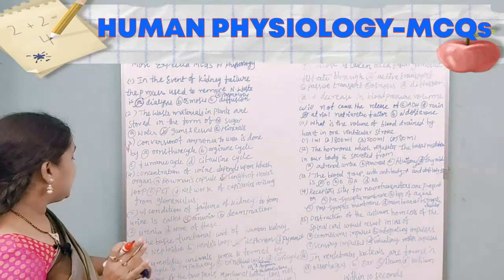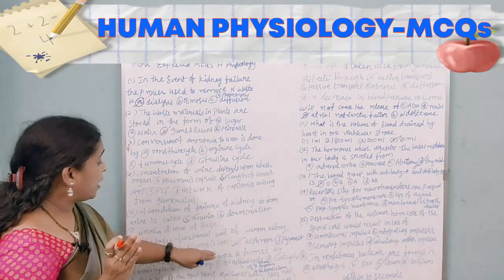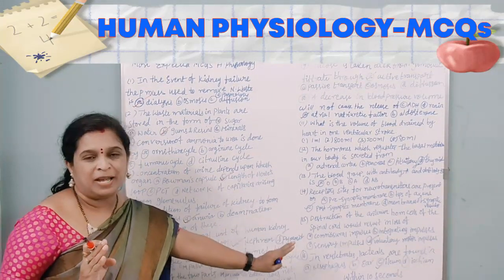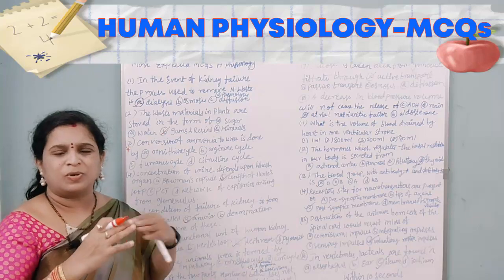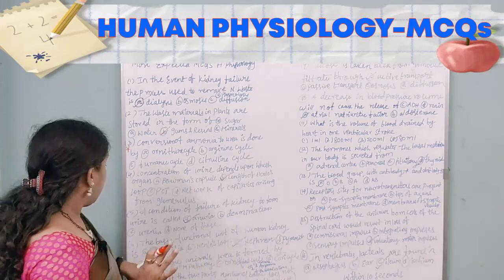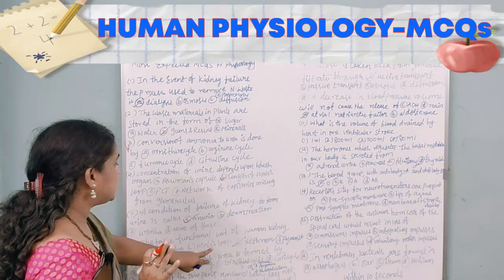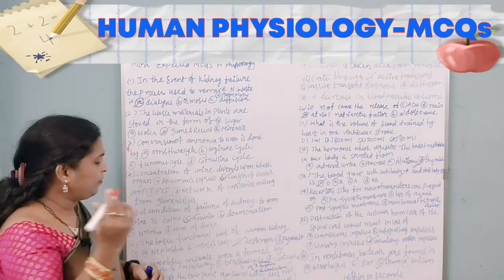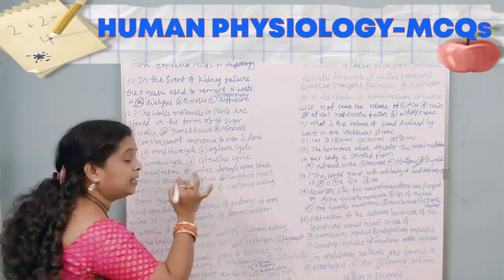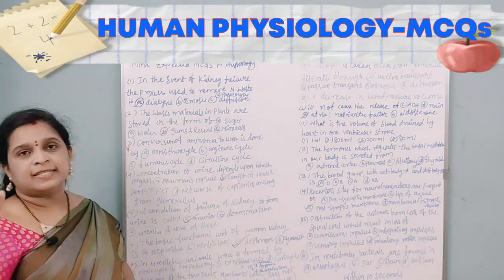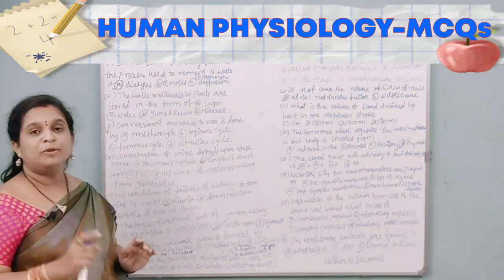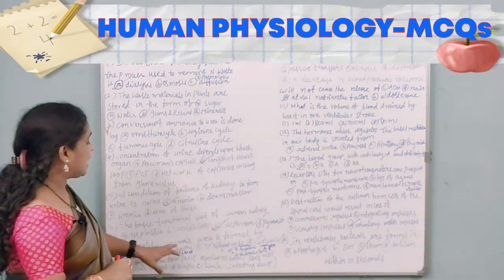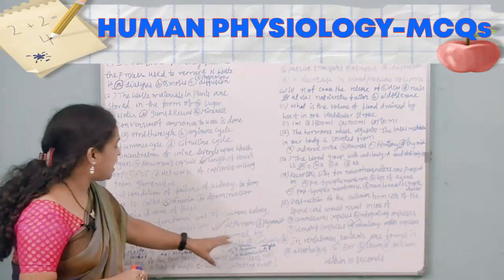The sixth question: the basic functional unit of the human kidney is — nephridia, Henle's loop, nephron, or pyramid? Pyramid is totally different from this question. The nephron is the functional unit of the kidney — this is something you would have studied in 9th, 10th, 11th, and 12th standard. The answer is nephron.